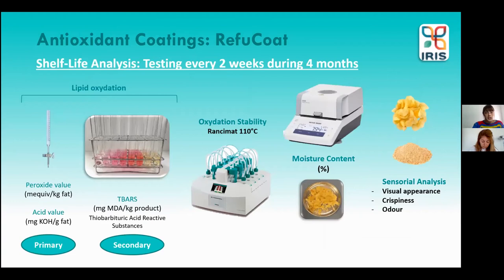We will test different parameters over around four months. One of the most important is lipid oxidation, studied through different analytical techniques depending on the food. We will also measure moisture content and organoleptic properties like visual appearance, crispiness, and odor. The best of the three active coatings tested will be the one showing both the highest decrease in lipid oxidation values and the best acceptance by panelists in terms of organoleptic properties.